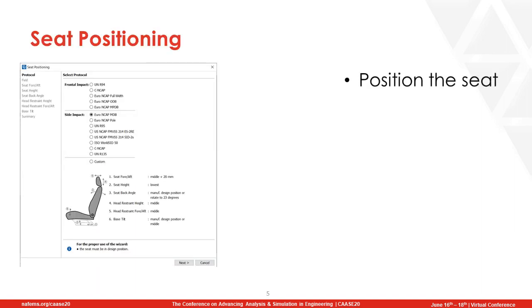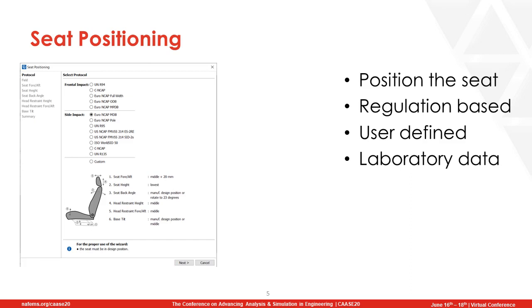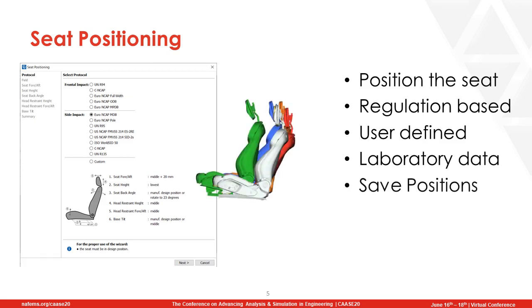We will start with the sled test setup. This will take place in ANZA, the preprocessor of Beta-CE Systems. We will start by positioning the seat using the seat positioning tool of ANZA. The seat can be positioned either regulation-based, or with user-defined movements, or by reading laboratory data and mapping them on the kinematic mechanism of the seat in order to have the exact same position as in a real crash test. The tool can also save different seat positions.